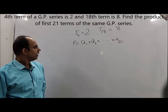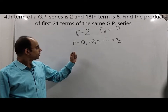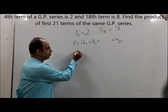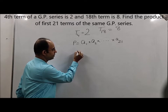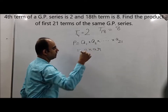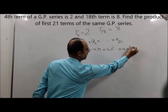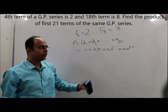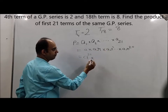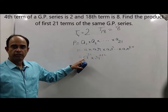We will be solving this question by multiple ways - first, the most simplest way which any student will think of. Before solving, we should think what exactly is being asked. You need to find the product of the 21 terms: a₁, a·r, a·r², ..., up to a·r²⁰. The product is equal to a²¹ into r²¹⁰.